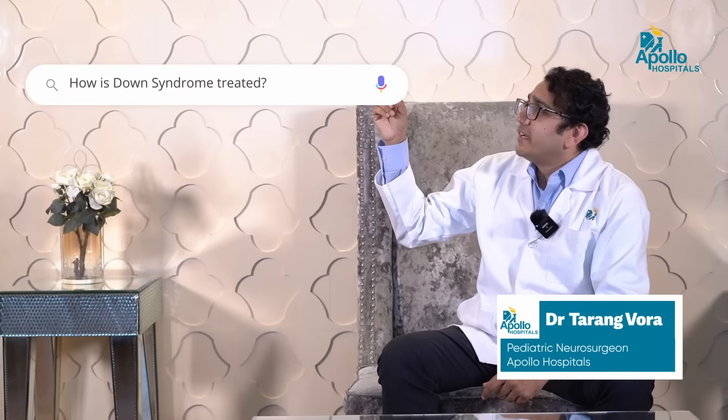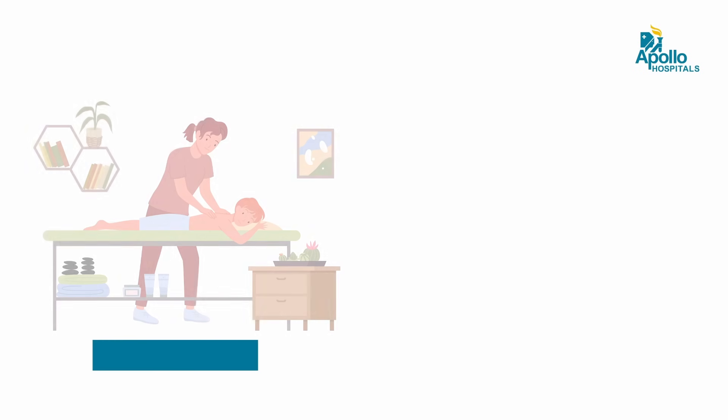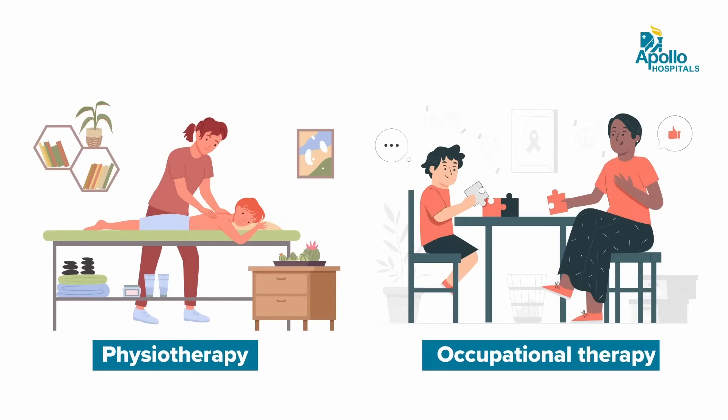How is Down syndrome treated? I will again reiterate that Down syndrome is not a disease, but it is just the way that the baby is born. The best way to inculcate such babies into society is through physiotherapy and occupational therapy, to help them become more functional and to integrate into the values of society.